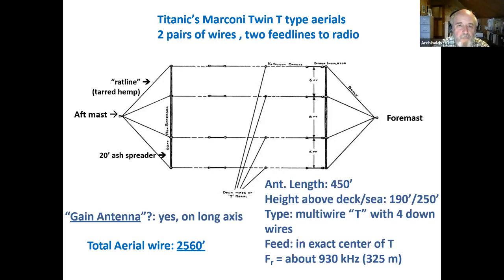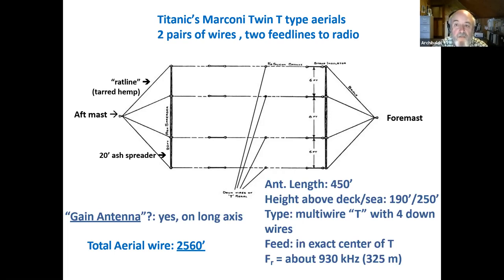The four down leads or down wires are the most functional part of the antenna, because that 450-foot cross on top is a very effective capacity hat reflecting against the steel ship just below. So most of the RF was radiated from the four verticals, which electrically look like a single, very fat vertical — which works very well. The thing has 2,560 feet of wire in it. On the Atlantic Ocean, it's in a great circle of perfect ground on a steel ship. The top of the antenna is 250 feet above the ocean, and the resonant frequency is about 930 kilohertz, though it was mostly used on 500 kilohertz, or 600 meters.